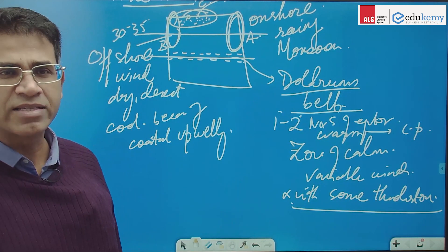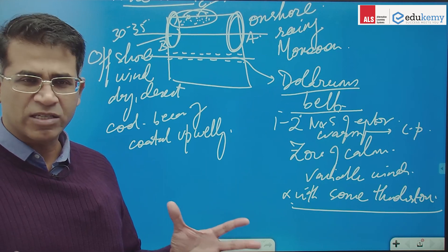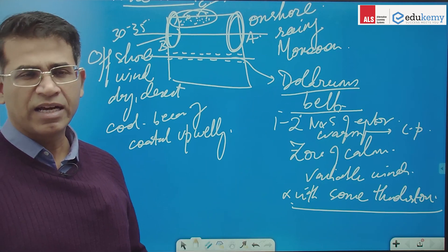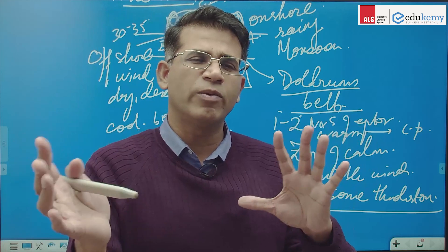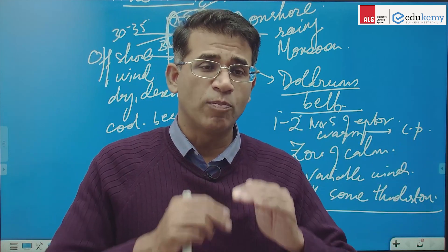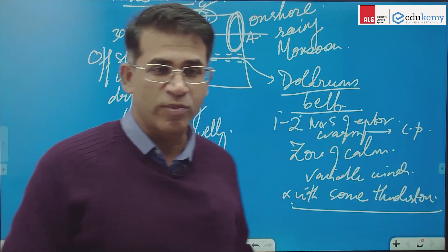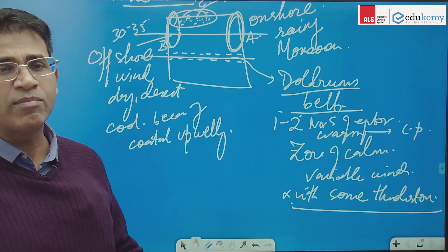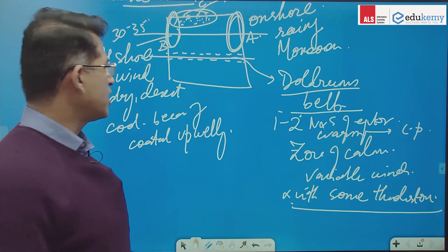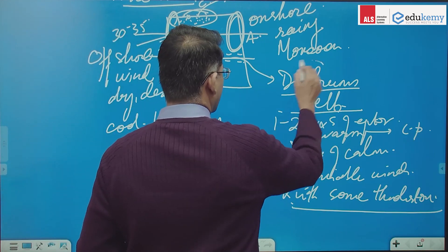it is a kind of an anomaly. Variable means no specific direction, calm conditions, winds are going in any direction, there is no proper consistent flow from A towards B and there are some thunderstorms, so this is the typical nature of the doldrums.